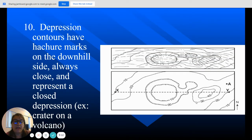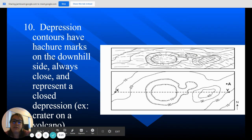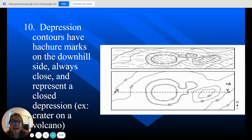So a depression is when it's going up, but then it comes back down again. Usually depressions have to do with a crater or a volcano, but how they're represented on a map is you see the increasing contour lines, but then they level out and these hachure marks represent going back down.